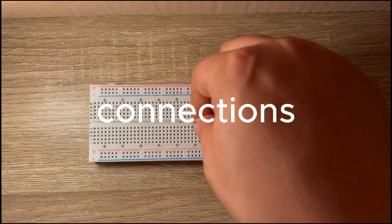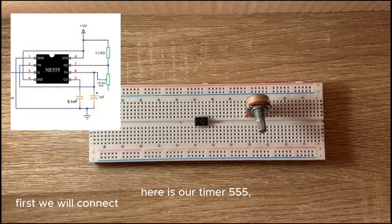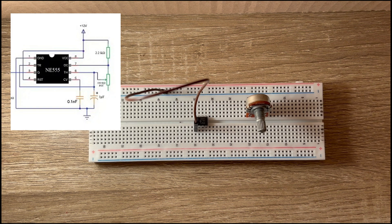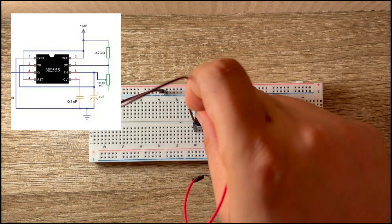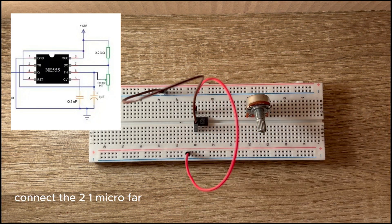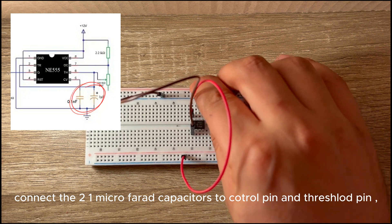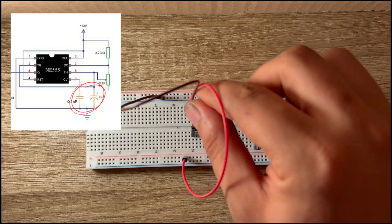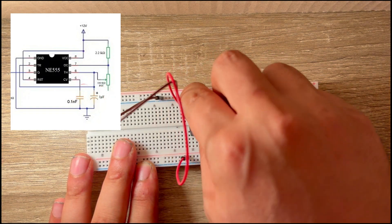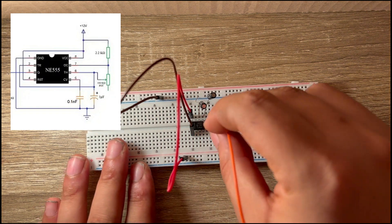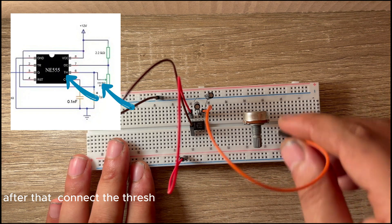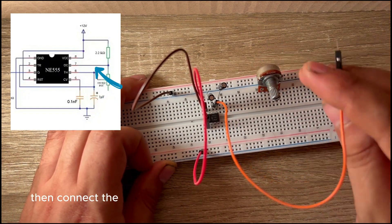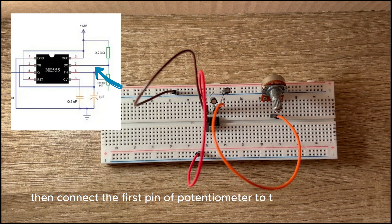Connections. Here is our timer 555. First, we will connect the VCC and ground to power supply as you see. Connect the two 1 microfarad capacitors to control pin and threshold pin. After that, connect the threshold pin to the second pin of potentiometer.